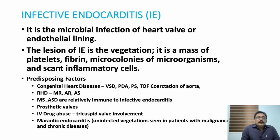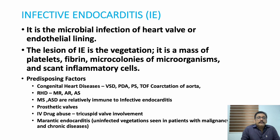The predisposing factors for infective endocarditis are VSD, PDA, pulmonary stenosis, tetralogy of Fallot, coarctation of aorta, and rheumatic heart disease — including MR, AR, and AS. Mitral stenosis does not routinely develop infective endocarditis, so MS and ASD are relatively immune to infective endocarditis.